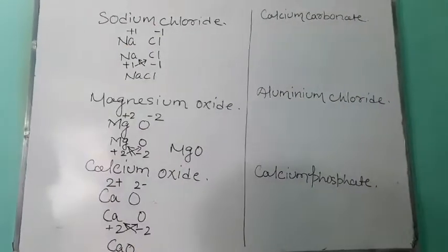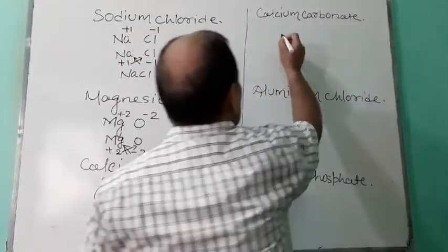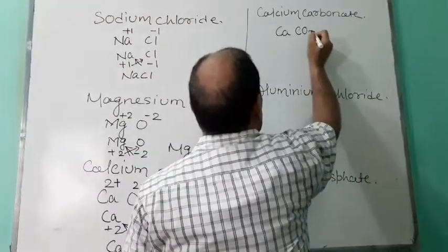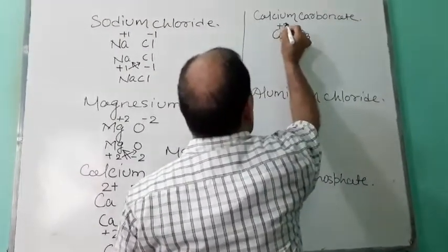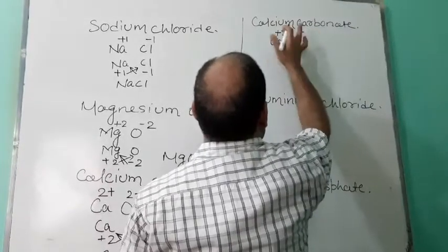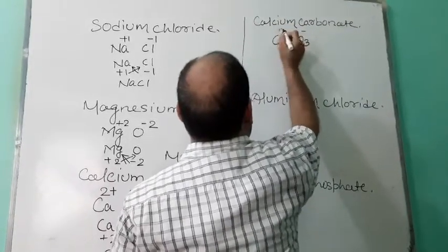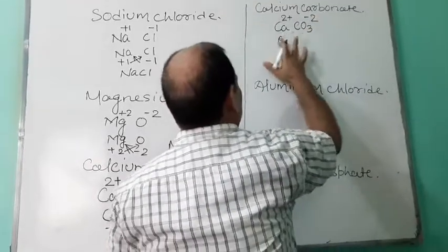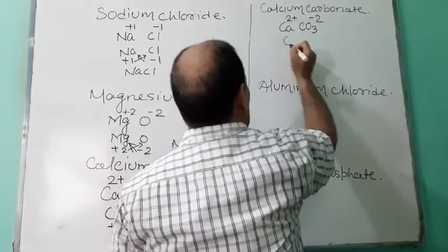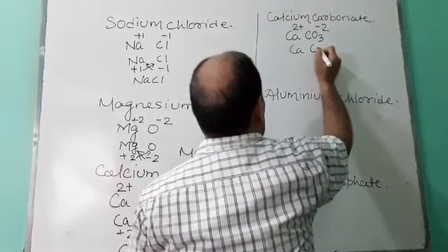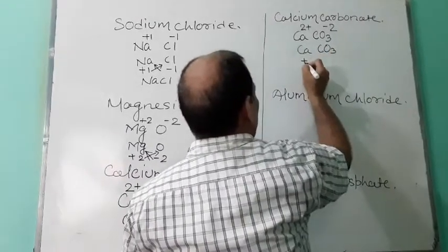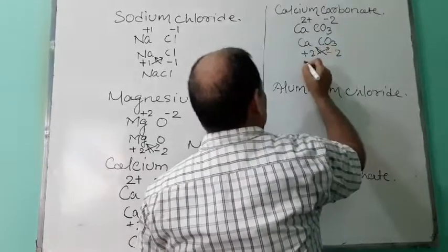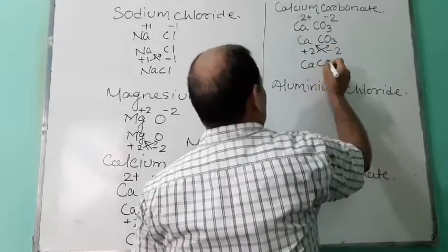Now calcium carbonate. Calcium is Ca; carbonate is CO3. Calcium has plus two; carbonate has minus two. Bring the charges down — Ca, CO3, plus two, minus two — and cross each other. The formula is CaCO3.